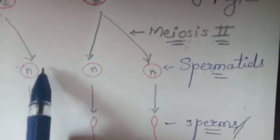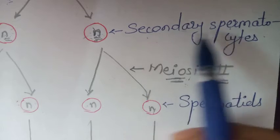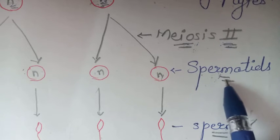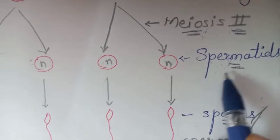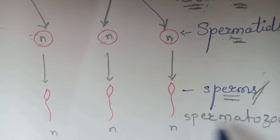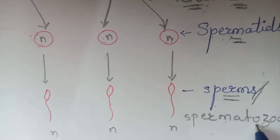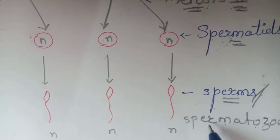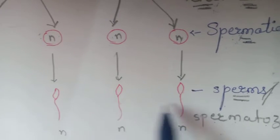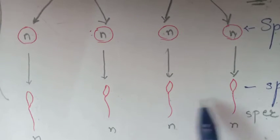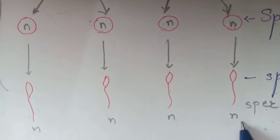These four daughter cells formed by the secondary spermatocytes are known as spermatids. These spermatids develop or transform later into active and mobile sperms. There are four spermatids and four sperms formed, which are also haploid — one, two, three, and four. Four spermatids transform into four sperms.